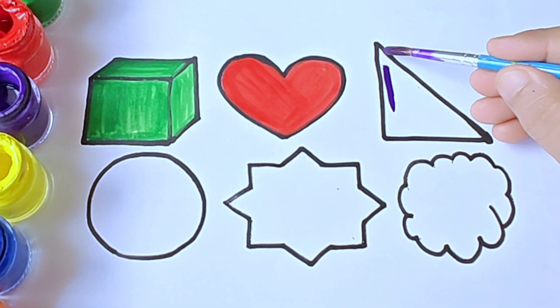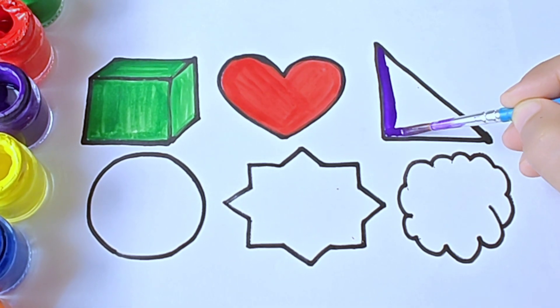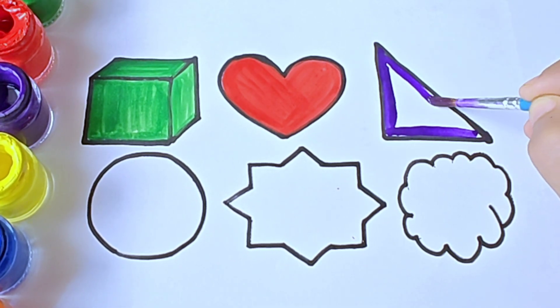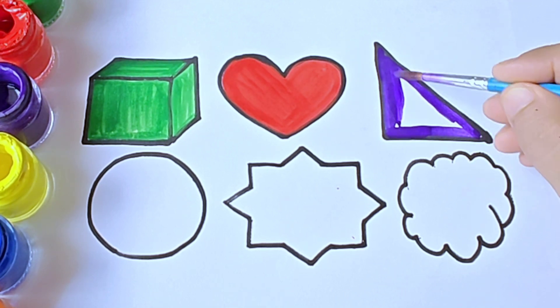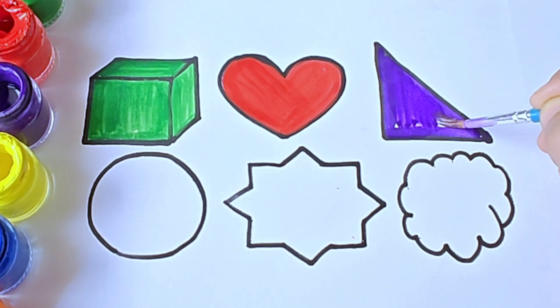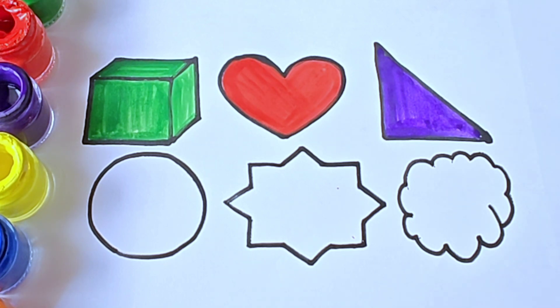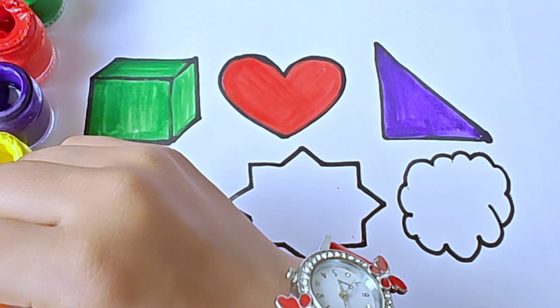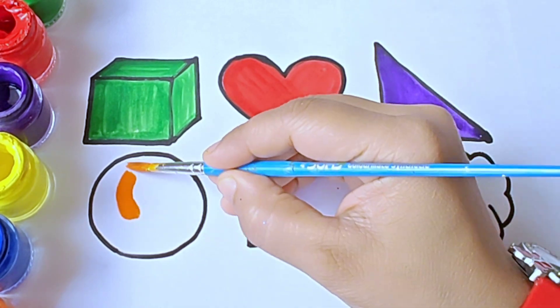Violet color. It is right triangle. It is orange color.